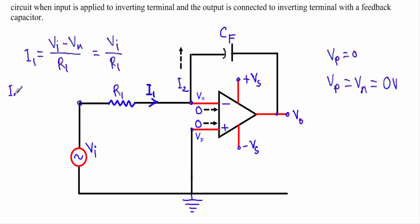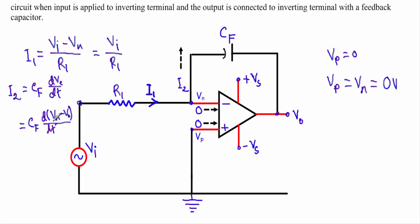For the capacitor, we can write I2 equal to CF times d(VN minus VO)/dt. Since VN equals zero, we get I2 equal to minus CF times dVO/dt. There is a minus sign in front.